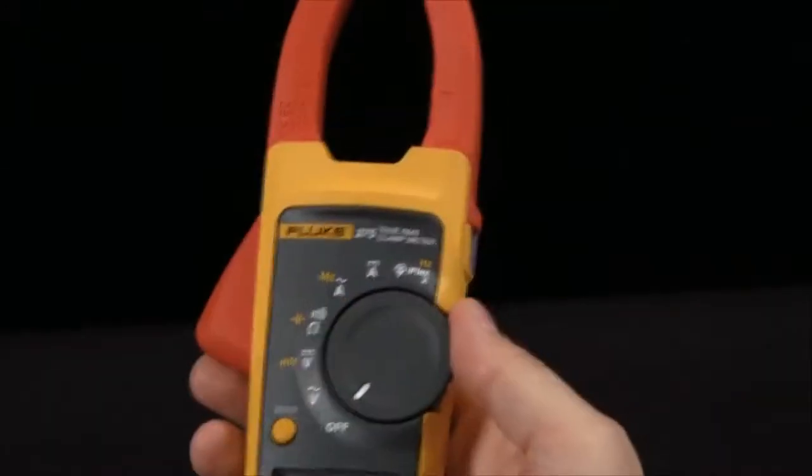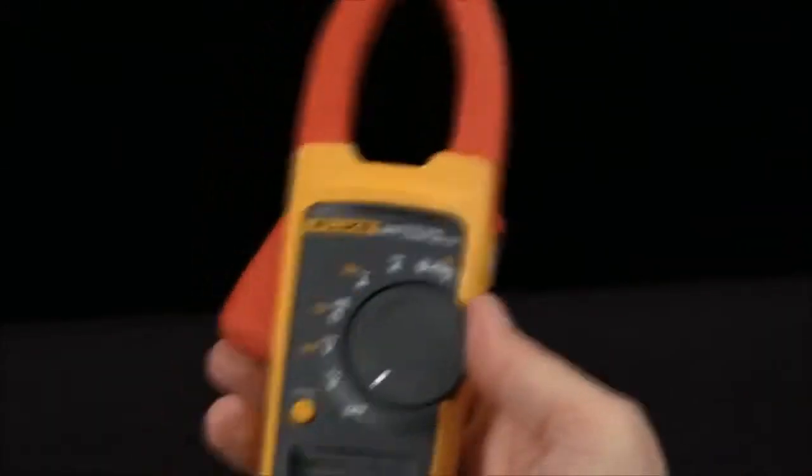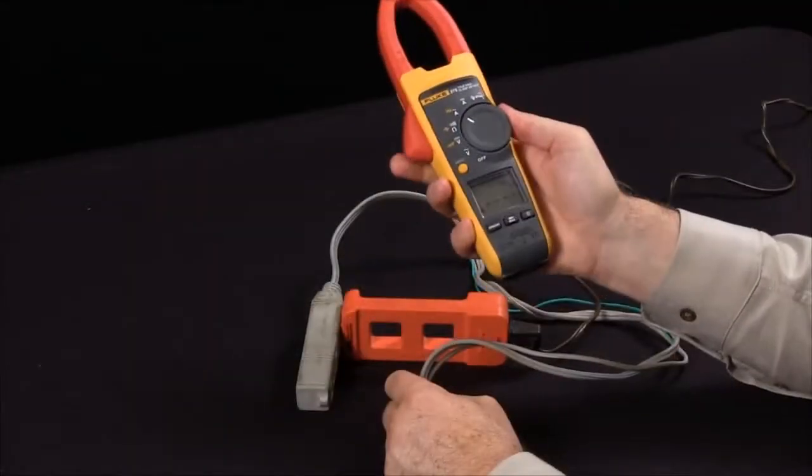How do I measure the current flow going through a power cord and out to a load? Let's set the clamp meter to read AC amps.